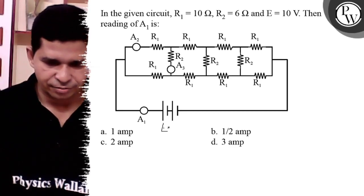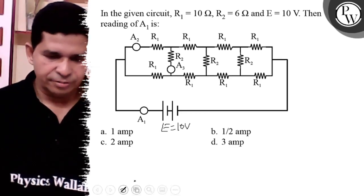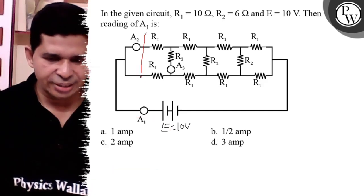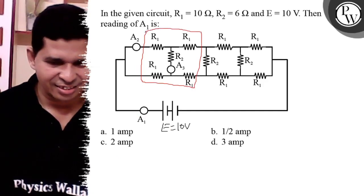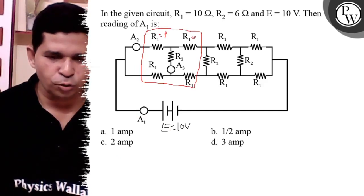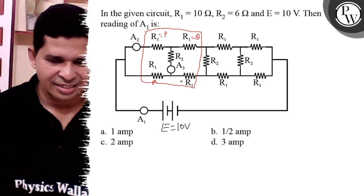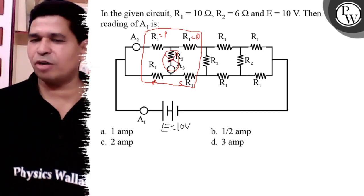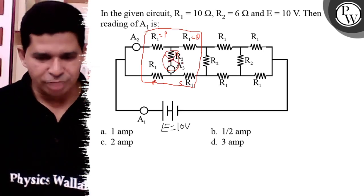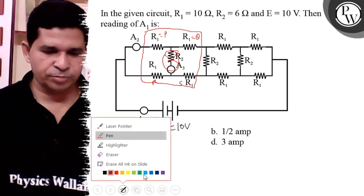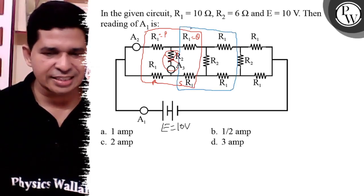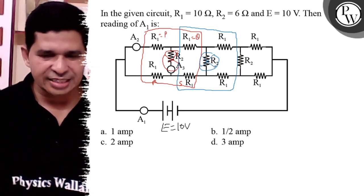It is a Wheatstone balanced bridge because it has P, Q, R, and S. The bridge is balanced so there is no current in that resistance — it is the galvanometer branch, so it is removed from the circuit. Similarly, another cascading Wheatstone bridge is there in that circuit because these four PQRS are balanced and there is no current in that resistance.